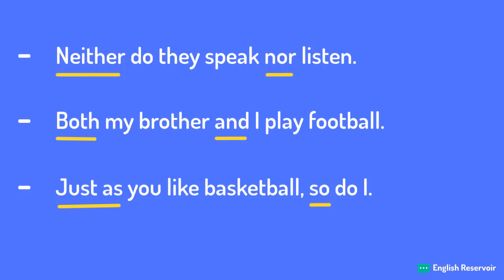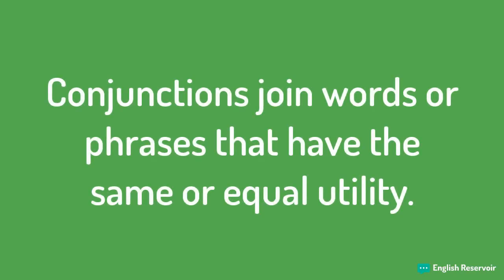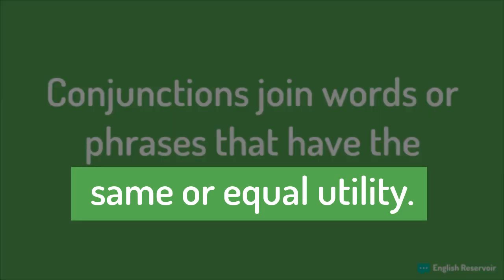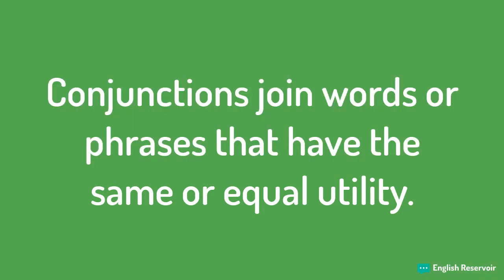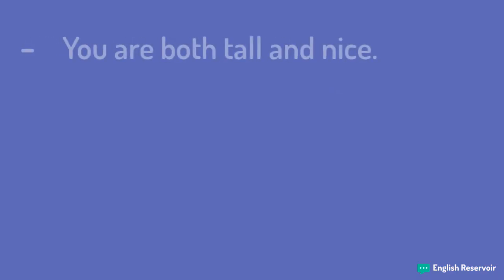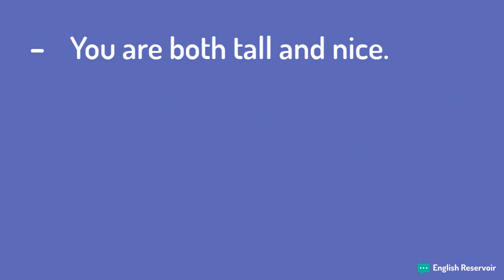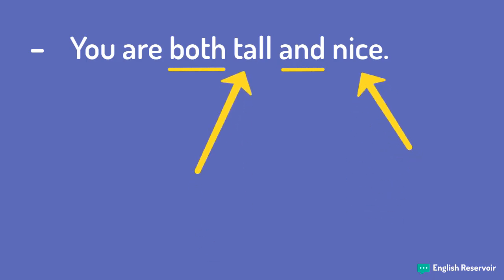We use conjunctions as well as correlative conjunctions in English to join words or phrases that have the same or equal utility — nouns with nouns, adjectives with adjectives, etc. For example: 'You are both tall and nice.' We use the correlative conjunction 'both and' to connect the adjectives tall and nice, hence they are of the same grammatical utility.